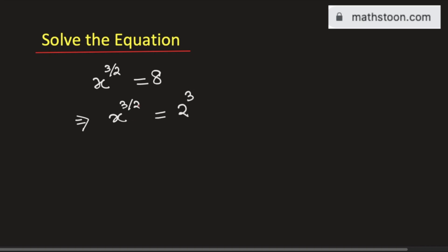As we have 3 by 2 as an exponent in the left hand side, so we also want to have it as an exponent in the right hand side. So this can be done as follows: 2 to the power 2 times 3 by 2.